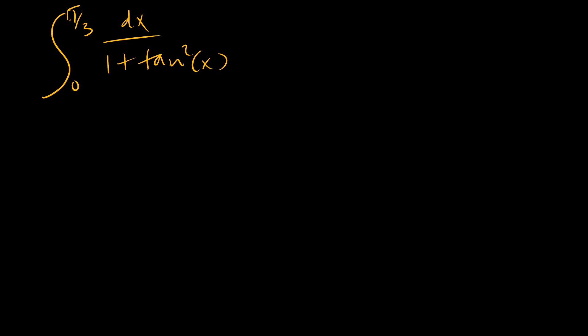It's easy to know that sine squared x plus cosine squared x equals 1. And then when we divide both sides by cosine squared x,